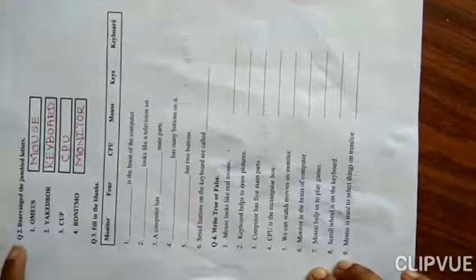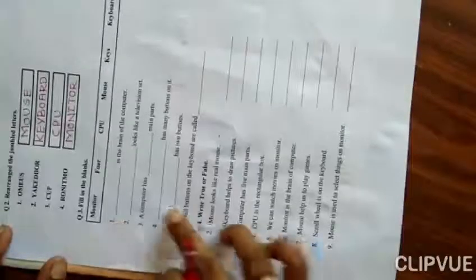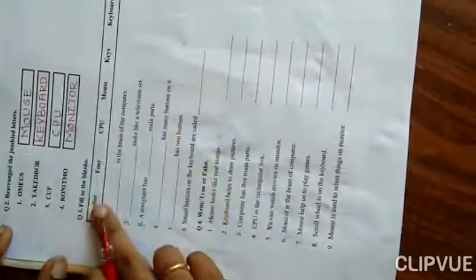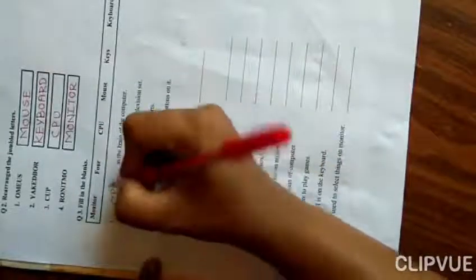Now we are going to solve the third question which is fill in the blanks. And here a word box is given so that you can find the answers from the word box only. Let's start. First fill in the blank: blank is the brain of the computer. Which is the brain of a computer? C-P-U. So write down here, C-P-U is the brain of the computer.